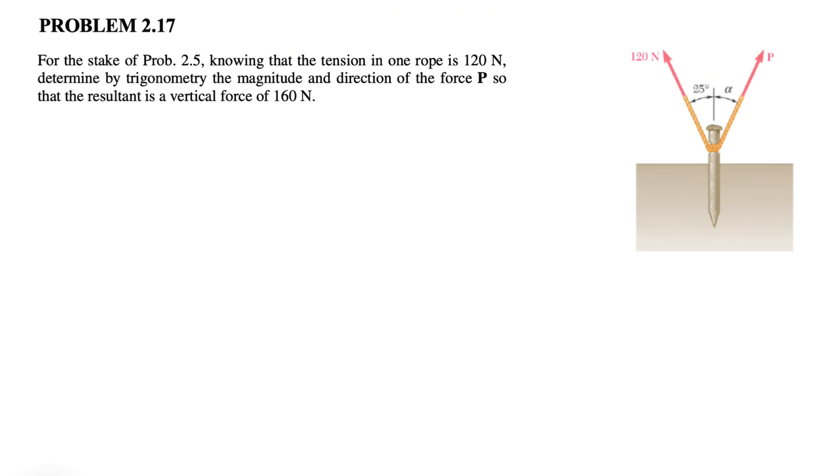In this question, we know that the tension in one rope is 120 N, and we need to determine by trigonometry the magnitude and direction of the force P so that the resultant is a vertical force of 160 Newton. So we need to find the magnitude as well as the direction or the angle alpha.